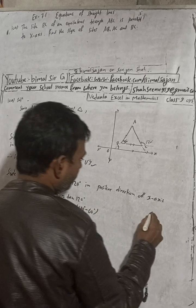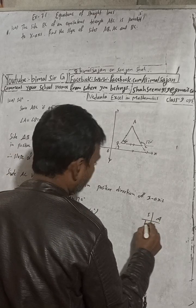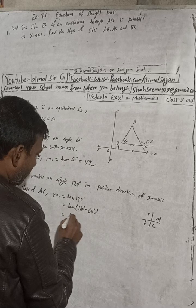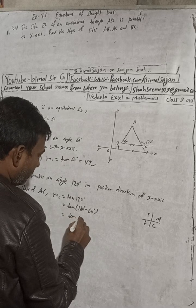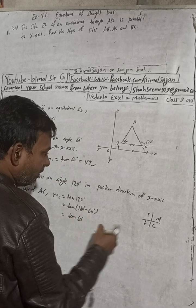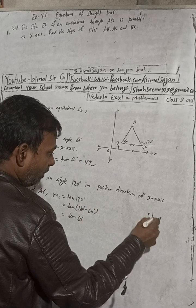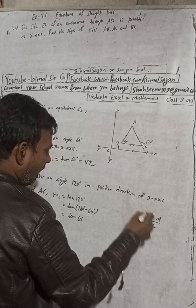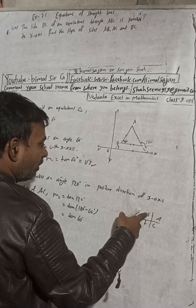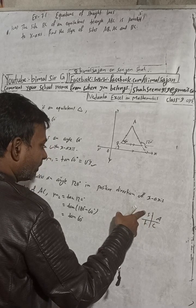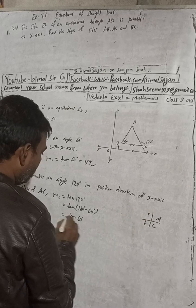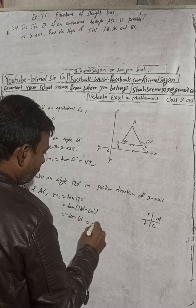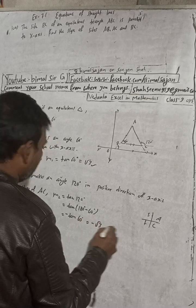By the CAST rule, 180° − 60° is in the second quadrant, where only sine and cosec are positive and all others are negative. So tan(120°) = −tan(60°) = −√3. Therefore, the slope of AC is −√3.